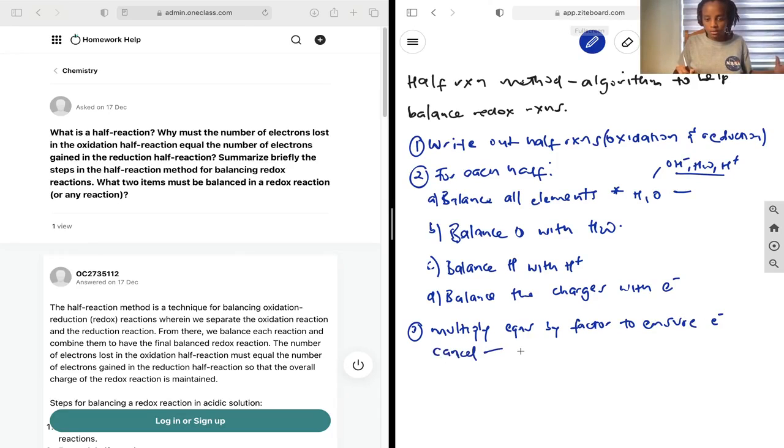Next, step four: we will simplify. Add the two equations back and simplify by canceling anything that appears on both sides of the forward reaction sign.